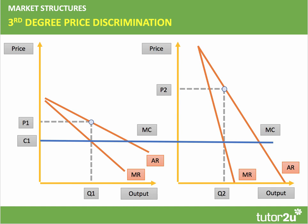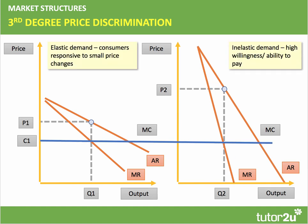The profit-maximizing price for the group with more inelastic demand is P2 — a significant rise in price. If the firm charged P2 to both groups, the left-hand group would be priced out of the market. With elastic demand, you charge a lower price P1 — still above cost, so profit is made. With the inelastic group, you charge a higher price P2, effectively extracting some consumer surplus and converting it into producer profit.